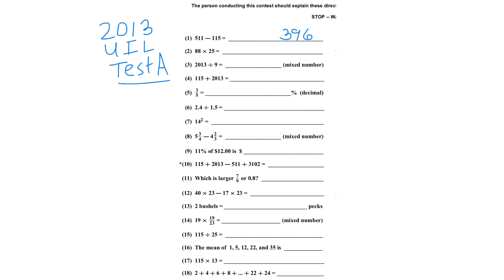For number 2, whenever you multiply by 25, just remember that 25 is actually one-fourth of 100. So what I'm going to do is take one-fourth of 88, which is 22, and then multiply by 100.